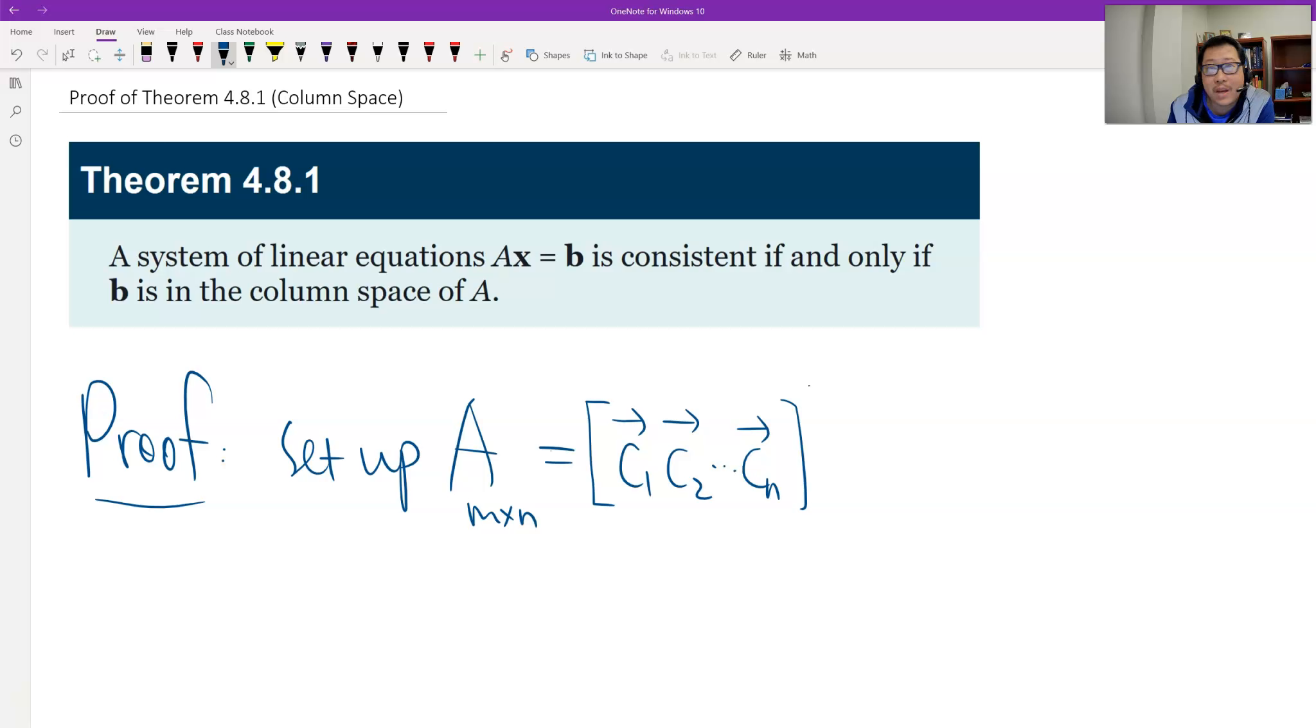So therefore we have n columns, right? So each column should belong to m-space, because the row is m. So we see the column vector should belong to m-space, right? And then the x, so we see x.